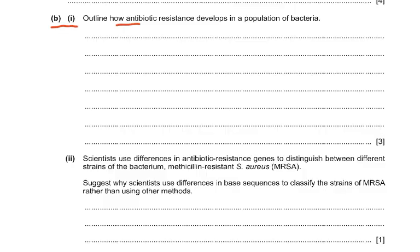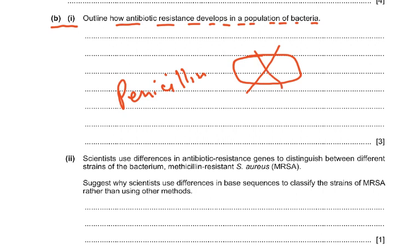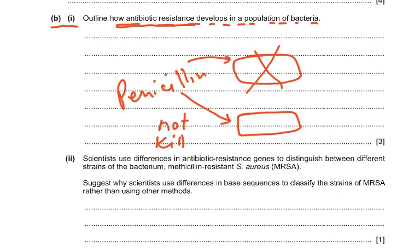Part b1: outline how antibiotic resistance develops in a population of bacteria. There's a bacteria and we use an antibiotic called penicillin, which destroys it. But a time comes that this bacteria has mutated and now penicillin does not kill it — it has developed antibiotic resistance. First, the antibiotic destroyed the bacteria, but after using penicillin for ten years the bacteria has become resistant to it.